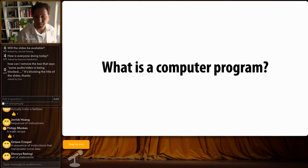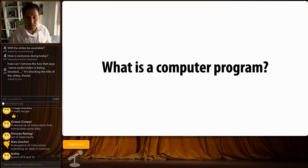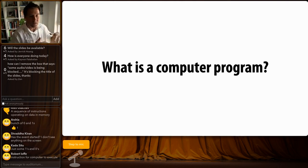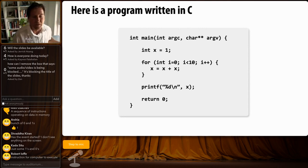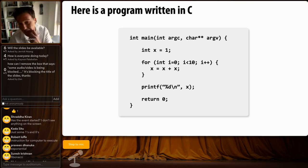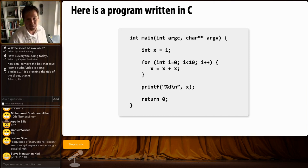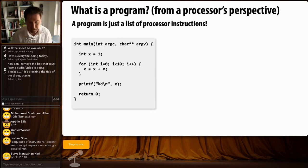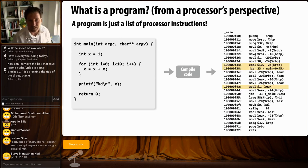What is a computer program? If somebody came up to you on the street and asked, what would your answer be? A sequence of instructions that manipulate some data, a set of statements? Sequence of operations operating on data, ones and zeros. For some of you, you might say here's a piece of C code. What does this code do? It's a for loop that seems to double the number every time - it computes two to the ten, basically 1,024.